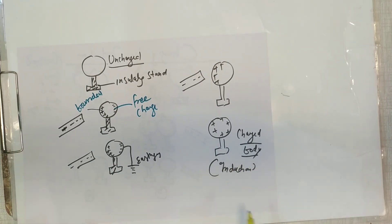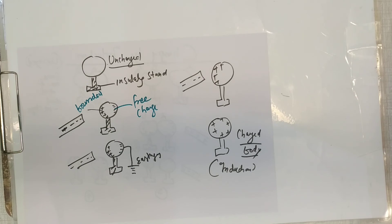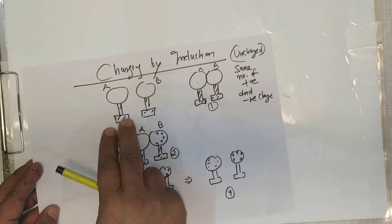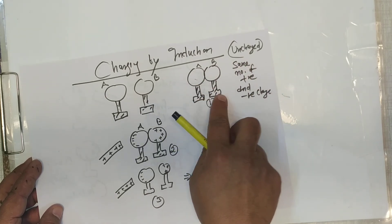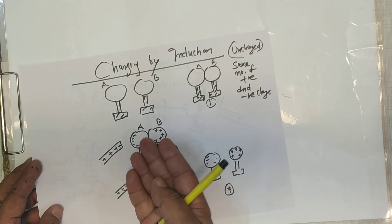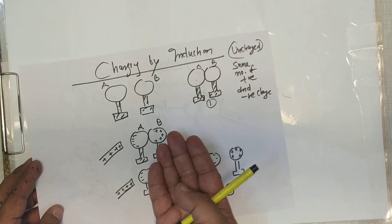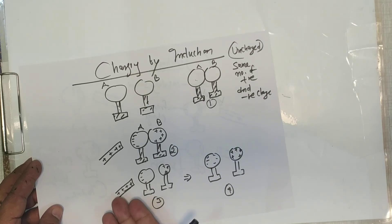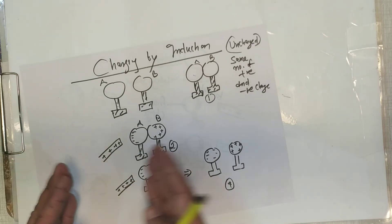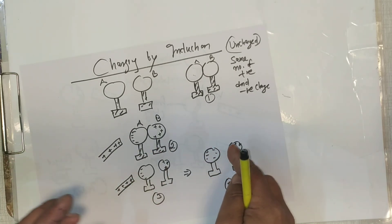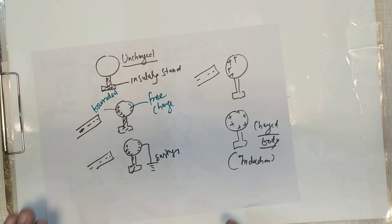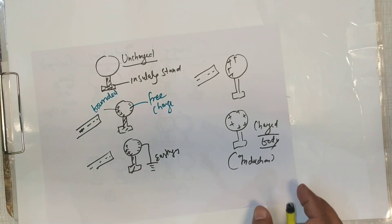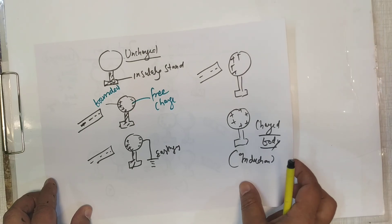To summarize the three methods: charging by friction involves rubbing; charging by conduction involves direct contact; charging by induction charges bodies without contact, by bringing a charged rod near them. In the two-body method, negative charges move to one side, positive to the other, and separating them gives two oppositely charged bodies. We'll discuss further details in the next session.